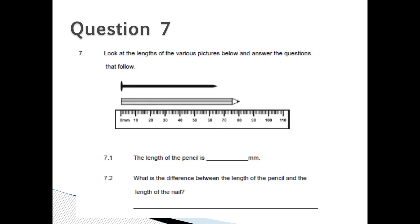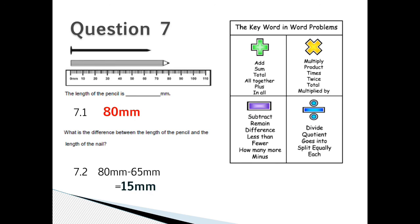Question 7: Look at the lengths of the various pictures and show the answers below. The length of the pencil is how many millimetres? 7.2: What is the difference between the length of the pencil and the length of the nail? Question 7: The length of a pencil is 80 millimetres. What is the difference between the length of the pencil and the length of the nail? It would be 80 millimetres minus 65 millimetres which will give us 15 millimetres.